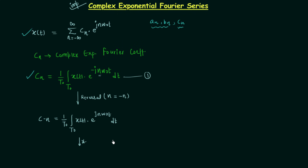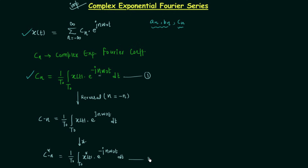After this we will perform the conjugate operation, which is a simple operation in which we reverse the sign of the imaginary part. Since cₙ is a complex coefficient with real and imaginary parts, after the reversal we now perform the conjugate operation. This gives c₋ₙ conjugate equal to 1 over T₀, integrated over T₀ of the conjugate of x(t) multiplied by e raised to power minus jn·ω₀t dt. Let's call this equation 2.